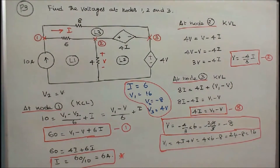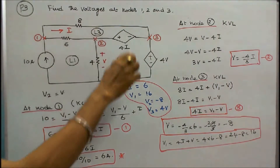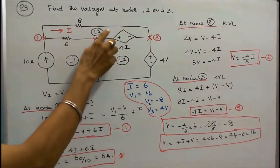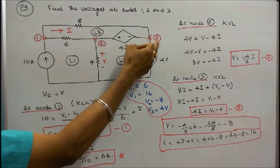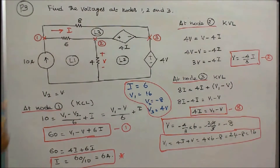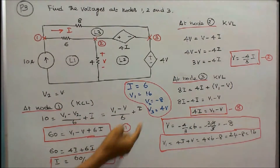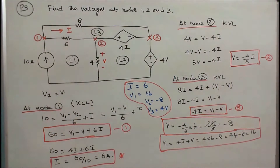Problem number 3: 3 resistors, 1 independent source, and 2 dependent sources are connected as shown in figure. The question is find the voltages at nodes 1, 2, and 3. The circuit consists of 3 loops. This is V1, V2, V3. First I assume V2 is equal to V. I take node 1 and apply Kirchhoff's current law in loop 1: 10 is equal to (V1 minus V) divided by 6 plus I. Simplifying: 60 is equal to V1 minus V plus 6I. That is equation 1.